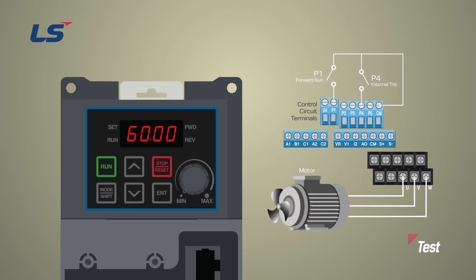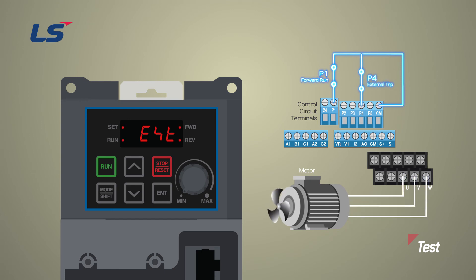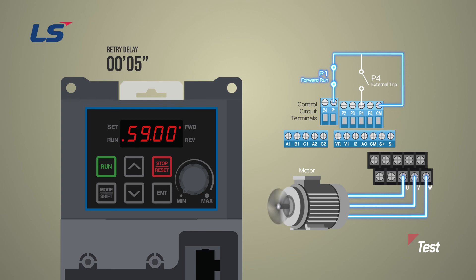We will proceed with the test under the parameter conditions set earlier. First, turn on the P1 terminal to operate the motor. Make a trip condition by turning on the P4 terminal. When the trip message appears on the LCD keypad and the motor stops, open up the P4 terminal from its closed state. Since external trip is a latch-type trip, the trip is not canceled even if P4 terminal is opened or turned off. It automatically resets 5 seconds after the trip occurs, and the motor starts because the P1 terminal is on.